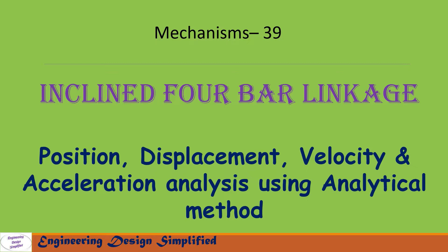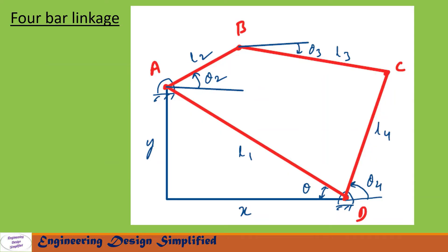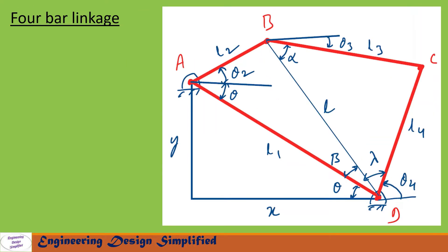In this picture shown is a four-bar linkage that is inclined. The link AD is a fixed link at an angle theta from the horizontal. Link AB is the crank with length l2, at an angle theta2 from horizontal. Link BC is the coupler link with length l3, and the angle between horizontal and the coupler link is theta3. Link CD is the follower link with length l4, at an angle theta4 from the horizontal.